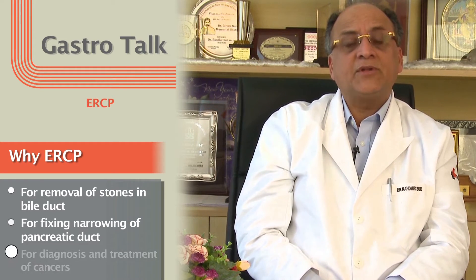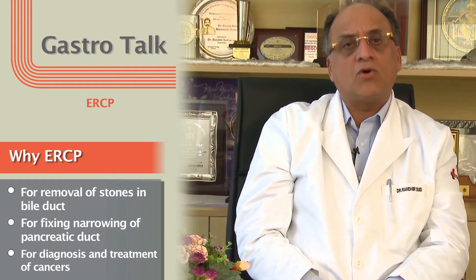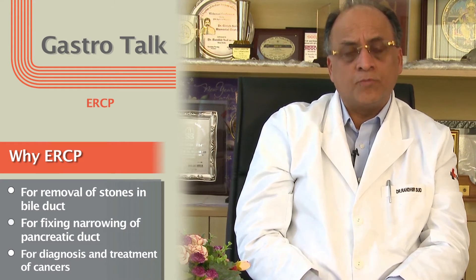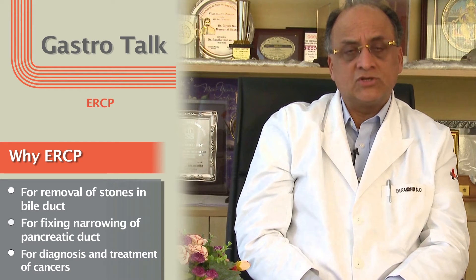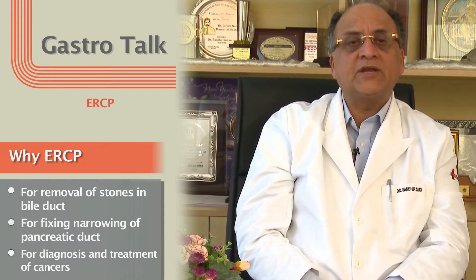Then there are patients who get advanced cancers of the bile duct or gallbladder or pancreatic duct, or the opening of the ampulla known as peri-ampullary cancer, which we can drain through ERCP and put in stents to give them long-term relief.